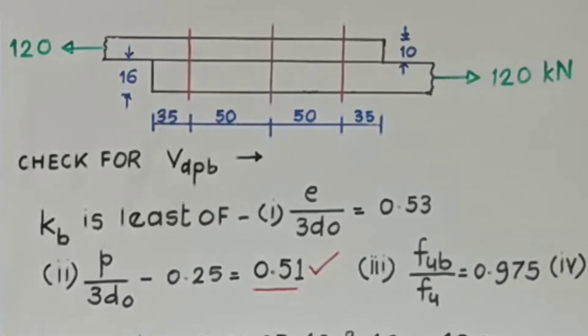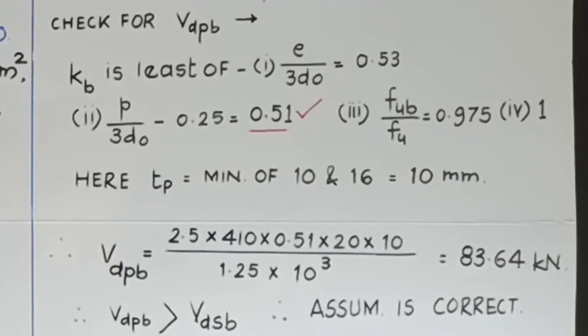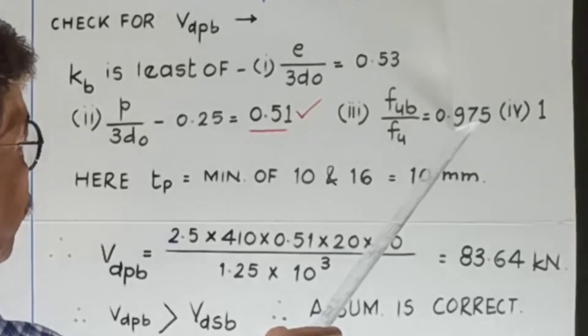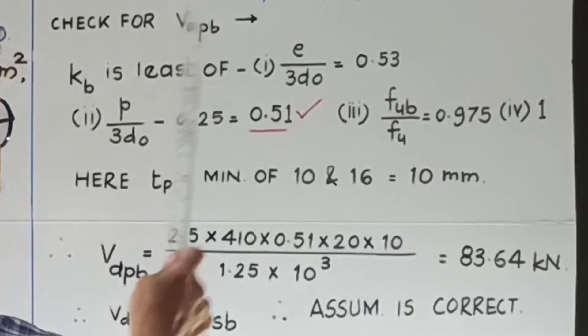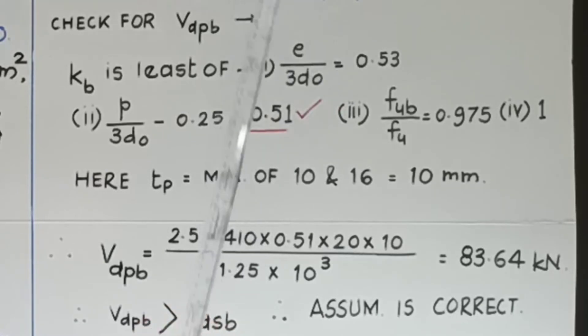We know that KB is the least value of: 1, E upon 3D0, put the value of E as 35, and D0 as 22, you will get it as 0.53. 2nd, pitch upon 3D0 minus 0.25, put the value of pitch as 50 mm, upon 3 into 22 minus 0.25, it comes out to be 0.55. 3rd one FUB upon FU, that is 400 upon 410, it always comes as 0.975, and 4th one is 1. The minimum of all those four values is 0.51, therefore KB is equal to 0.51.